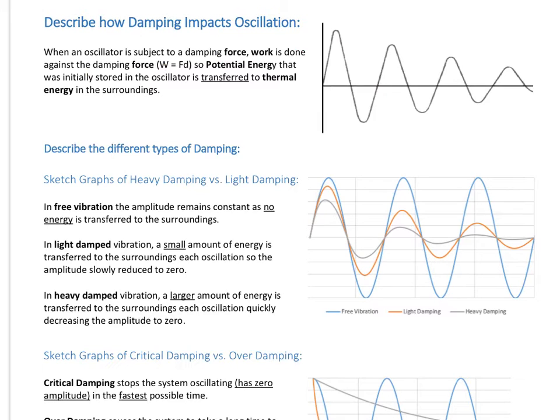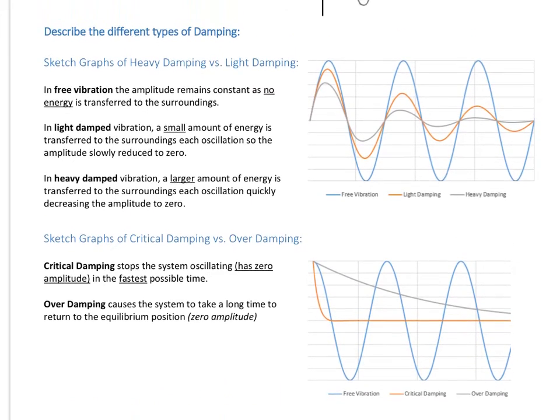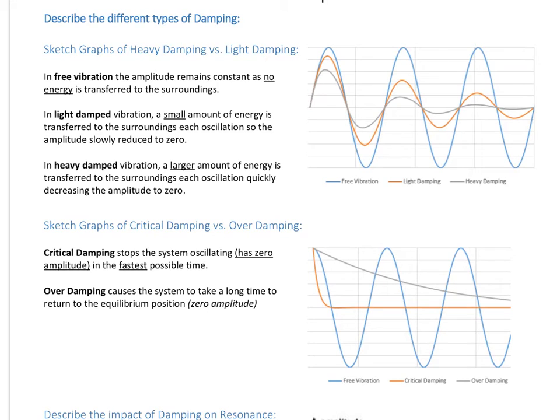Now there's four kinds of damping you need to know about: heavy damping, light damping, critical damping, and over damping. So those are the four scenarios. And in each case here, I've plotted the graph of free vibration just for comparison. So if we look here, so your free vibration is this blue one here. You can see the amplitude stays the same and it's just continuing to oscillate. It's not transferring energy to the surroundings.